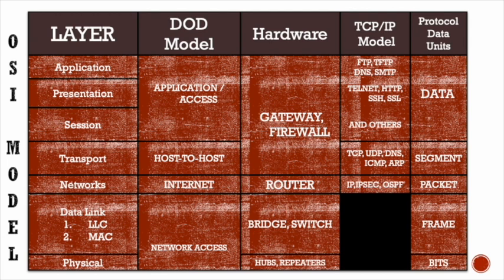At the network layer, layer three, we have a router. Routers look at a device's IP address. Because the router is at the network layer, it is more intelligent than the layers below it and can perform those functions too — it can analyze the MAC address like a switch, or just pass data without analysis like a hub. The protocol data units for the network layer are known as packets. At the transport layer, layer four, we have TCP and UDP, which are protocols responsible for connection-oriented or connectionless communications. The protocol data unit for the transport layer is known as segments.